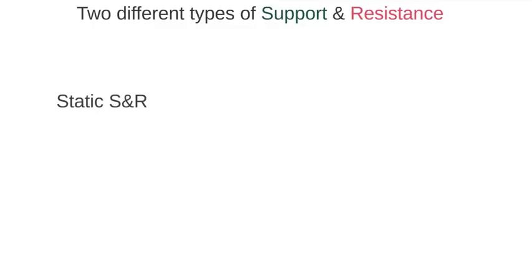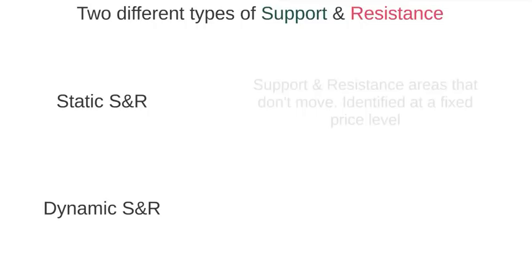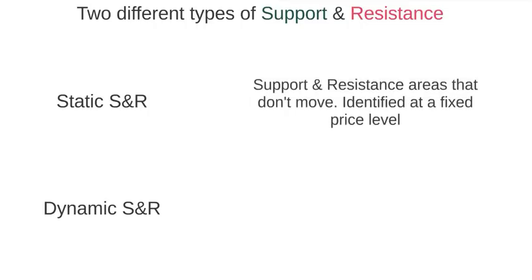There are different types of support and resistance levels, and I like to split them into two categories: static support and resistance and dynamic support and resistance. Static, as the name suggests, are support and resistance areas that don't move. They are identified by the specific price level that historical price action has shown them to be at. This is the main type of support and resistance people know and refer to.